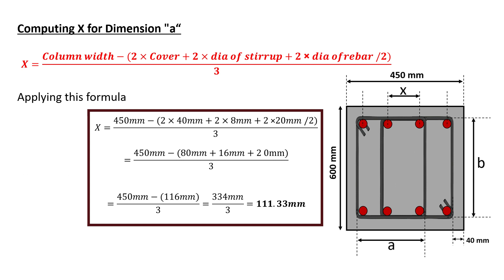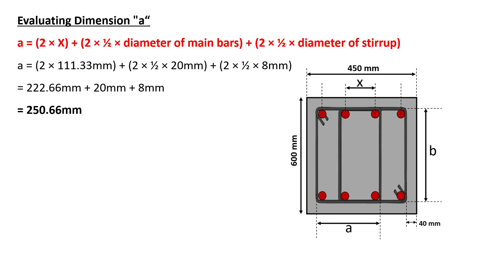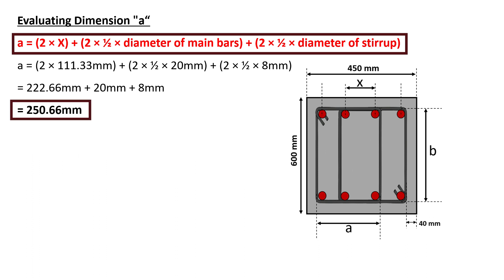With the value of x obtained, we can calculate the dimension A. A is calculated by using the formula A equal to twice x plus twice half the diameter of main bars plus twice half the diameter of stirrup. On substituting these values, the value of A will be calculated as 250.66 mm.